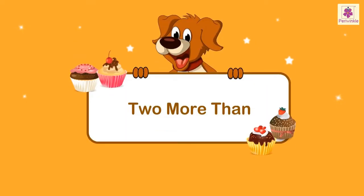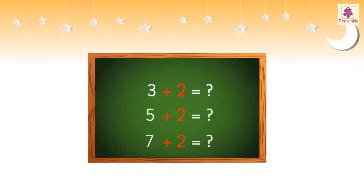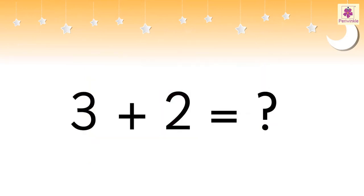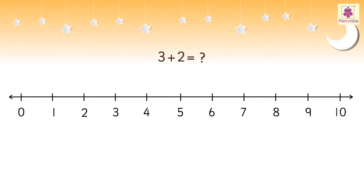Let us learn to find two more than a number. What is two more than three? To find two more than three, we can use the number line — from the number three, move two numbers in the forward direction and get the answer as five.